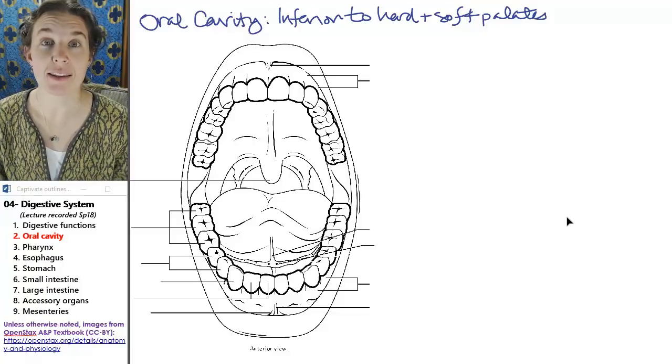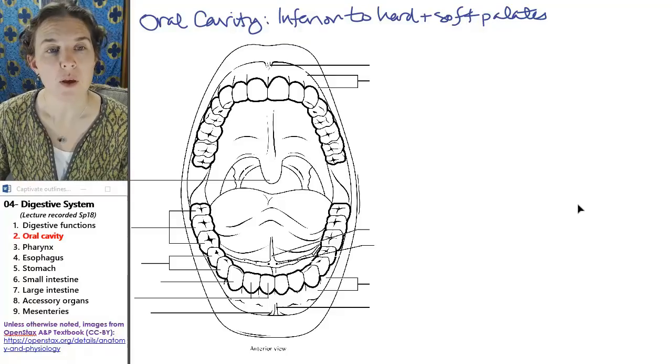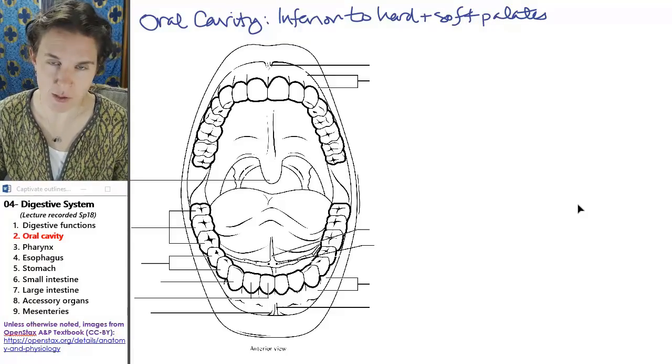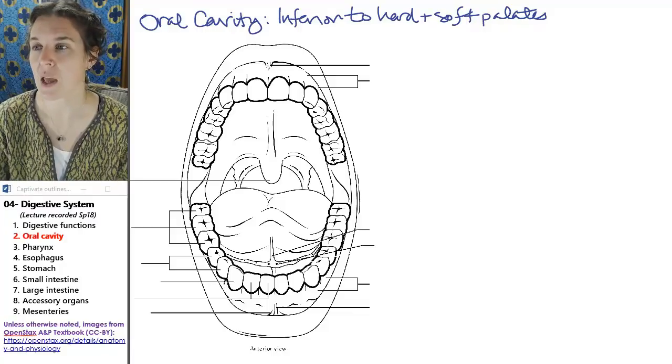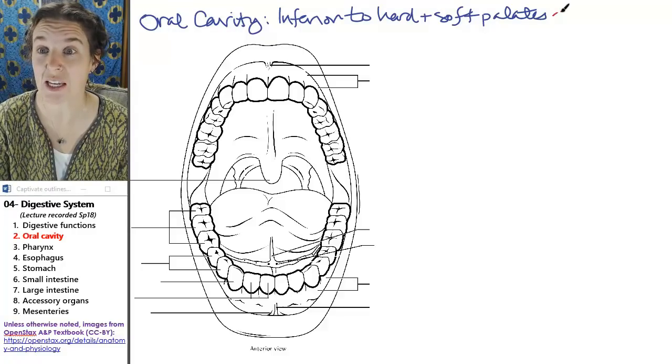All right, let's look at the anatomy of the oral cavity. First of all, we should probably define the oral cavity and we'll do that in a second. But in the oral cavity, you are going to have both mechanical and chemical digestion taking place.